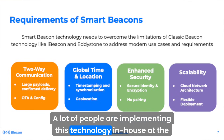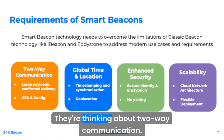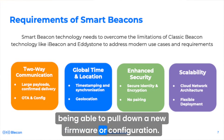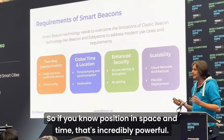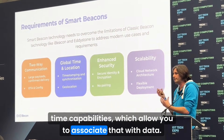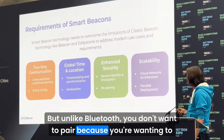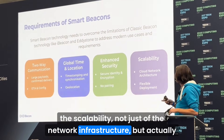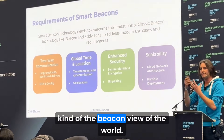A lot of people are implementing this technology in-house at the moment where they have the capability. These devices are looking much more like an IoT product: thinking about two-way communication, payloads, being able to synchronize data, pull down new firmware or configuration. They care not just about location but also time — if you know position in space and time, that's incredibly powerful. For the cost of a Bluetooth chip, you're effectively getting GPS and real-time capabilities. Security is important, but unlike classic Bluetooth, you don't want to pair — you want to work more like a cellular model. And of course scalability, not just of the network infrastructure but how you deploy it.